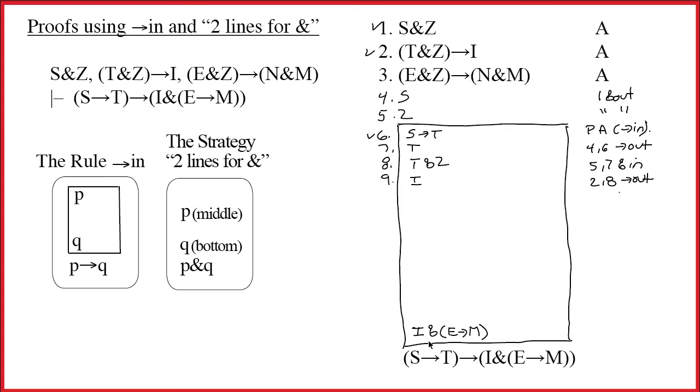This is the line we care about. We recognize that it has an ampersand as its main connective. The main connective tells us what to do. We're clearly doing 2 lines for ampersand. This instance of 2 lines for ampersand is going to happen inside of another process. But that doesn't change what we're going to do at all. All we're going to do is right here, in the middle, we write the first part, I. And then down at the bottom, we write the other part, E arrow M. We've left space to prove both of them. And so now let's prove them.